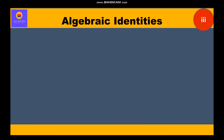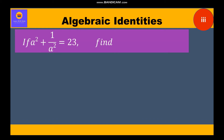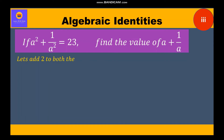Now let's move to the third question. It is given: if a square plus 1 by a square is equal to 23, find the value of a plus 1 by a. If you observe, a square plus 1 by a square is given as 23 and we have to find a plus 1 by a. This question is exactly opposite to questions 1 and 2. We already have squared terms and we just have to add 2 on both sides so that it takes the form of an identity.